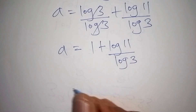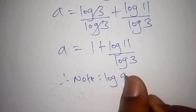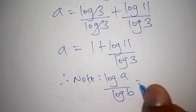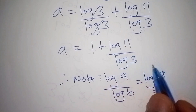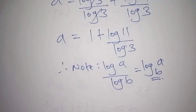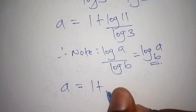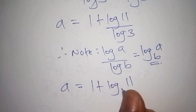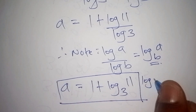We note that log(a)/log(b) can be written as log base b of a. So log11/log3 = log₃(11). Therefore, our final logarithmic answer is: a = 1 + log₃(11).